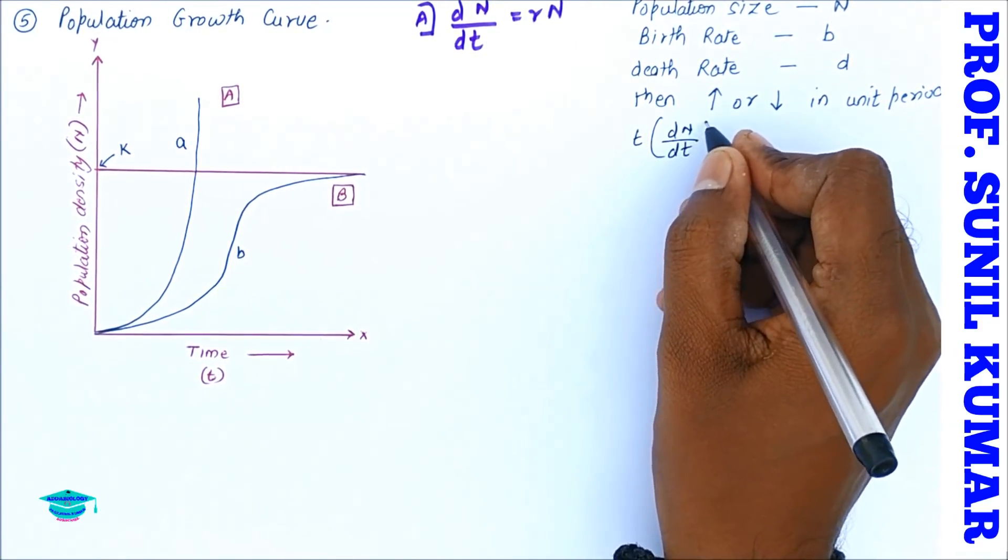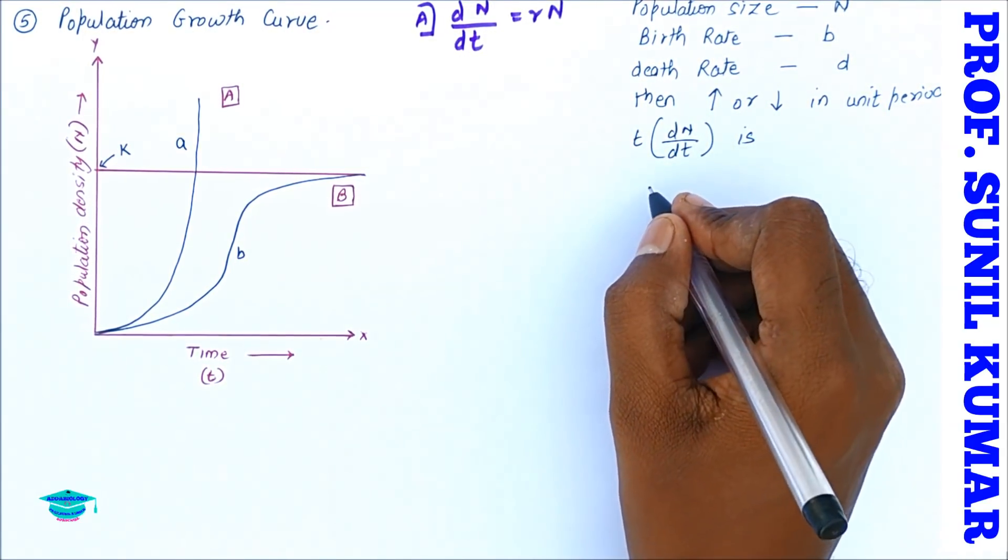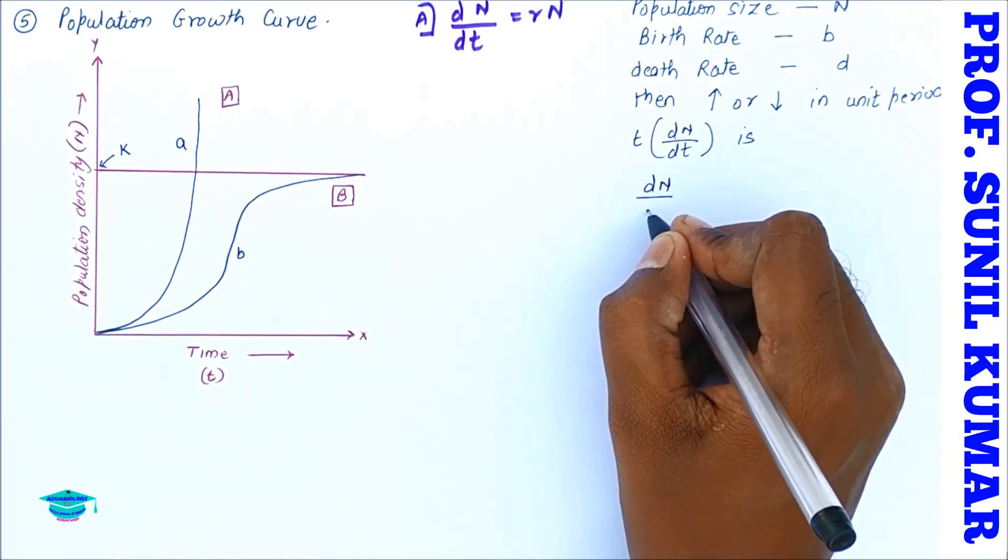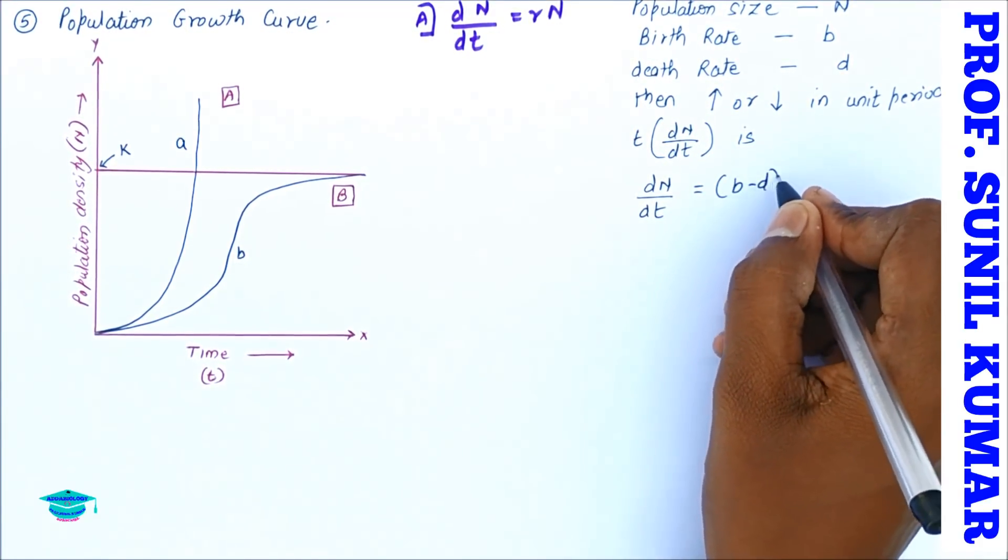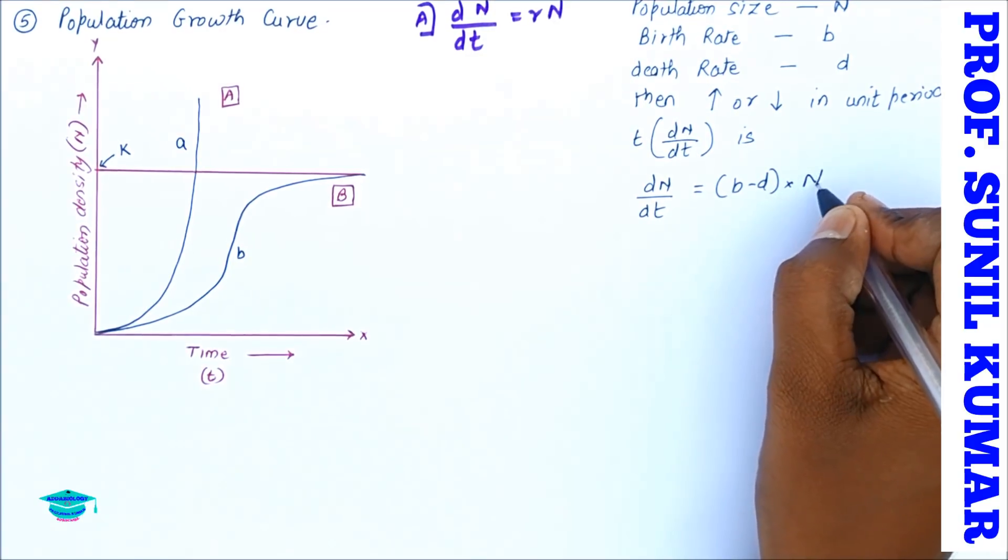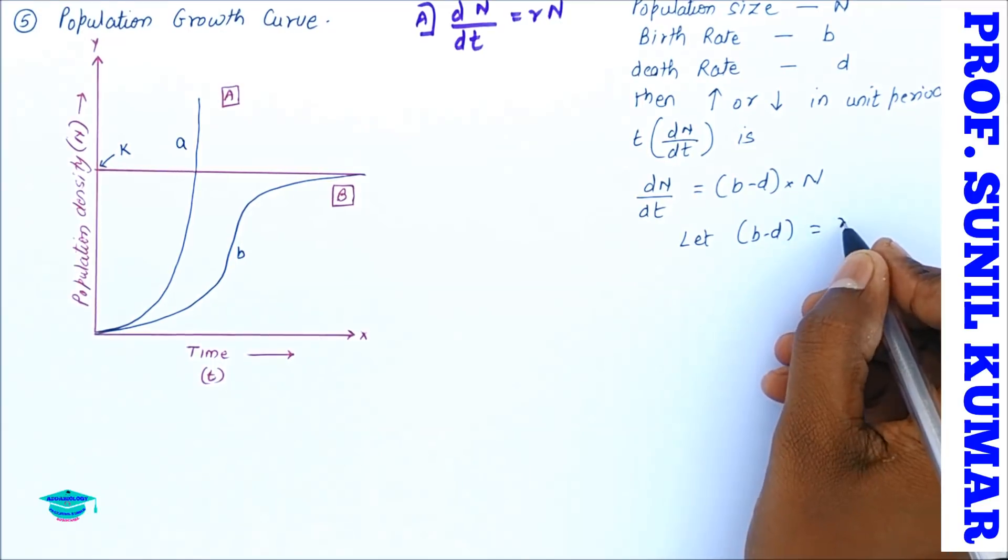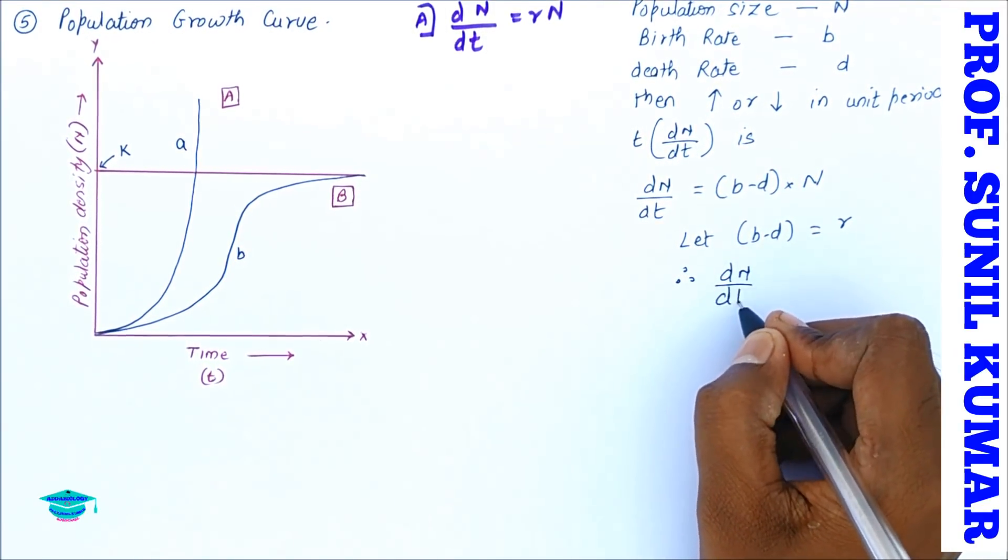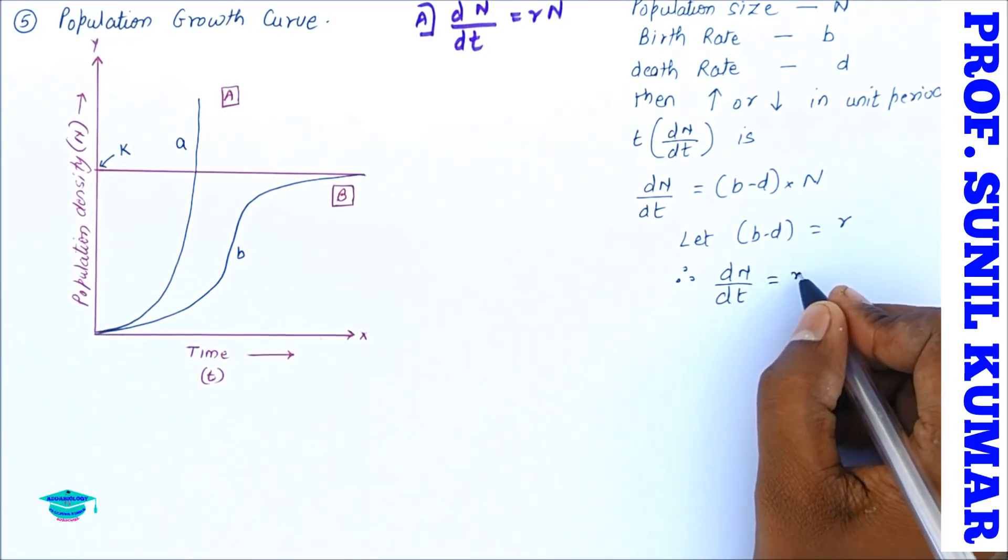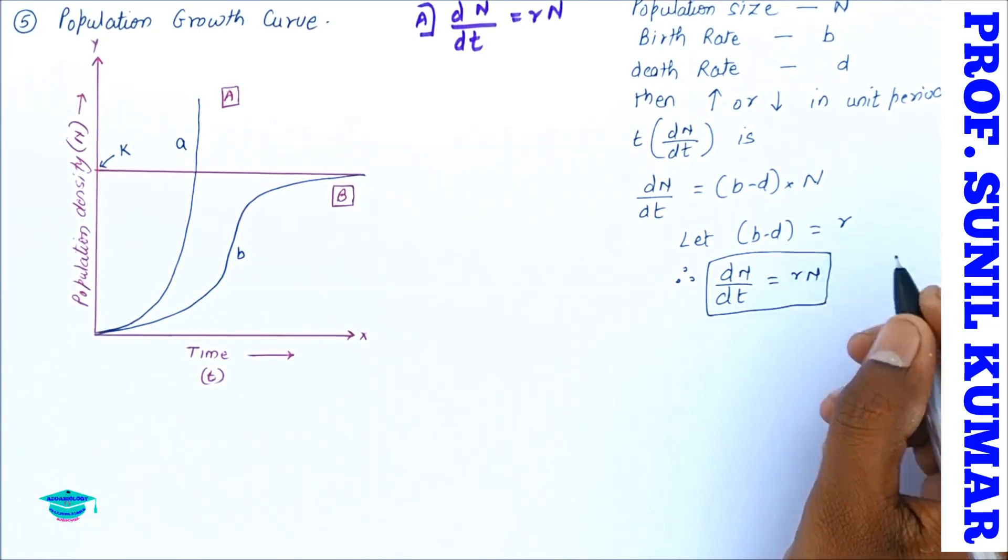Now we need to understand one more thing: this growth curve has crossed the carrying capacity. So the formula for this particular growth curve becomes dN/dt is equal to (b minus d) into N. Now what is b minus d? It is birth minus death rate. So let us assume that b minus d is equal to r.